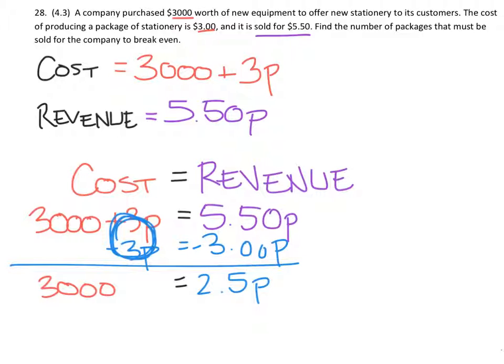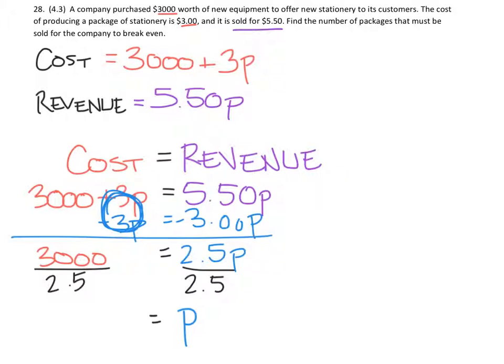And then finally in this process, we're just going to divide both sides by the coefficient of P, which is 2.5. So we have 3,000 divided by 2.5. 2.5 divided by 2.5 is 1. Some people would say that cancels out. Just be careful with that. We just want to know that that's not 0, but perhaps we could call that a phantom 1 like this. And then we find that 3,000 divided by 2.5 is 1,200.